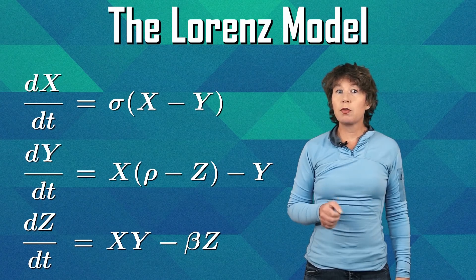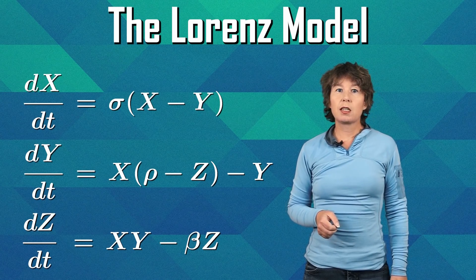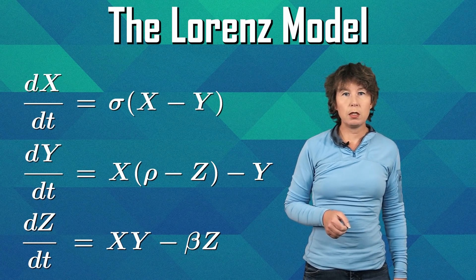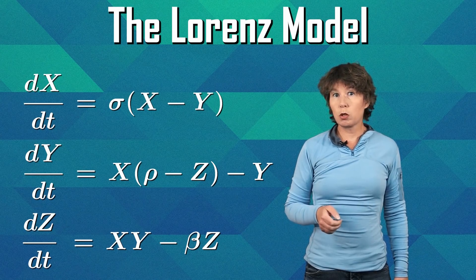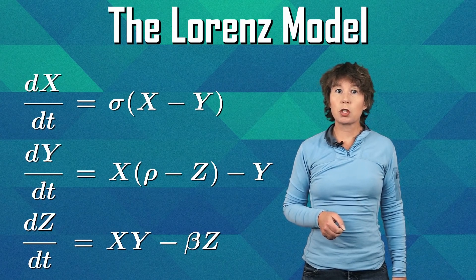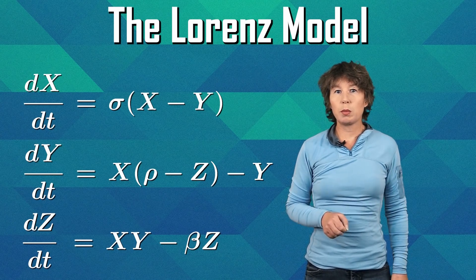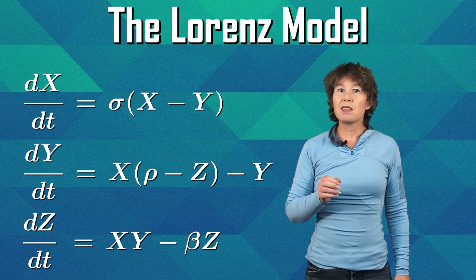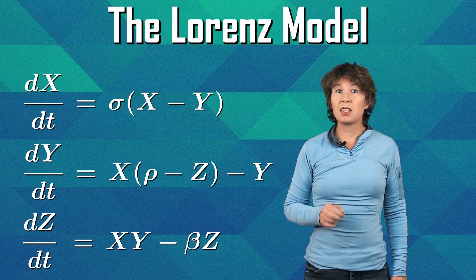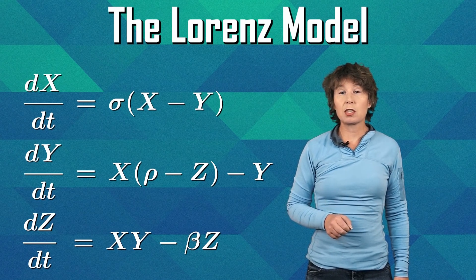In the Lorenz model we have three variables, x, y, and z, and they are functions of time, that's t. This model can be interpreted as a simplified description of convection in gases or fluids, but just what it describes does not really matter for our purposes. The nice thing about the Lorenz model is that you can integrate the equations on a laptop.